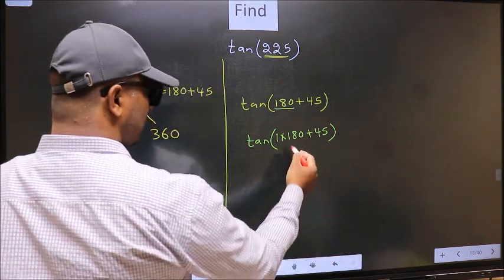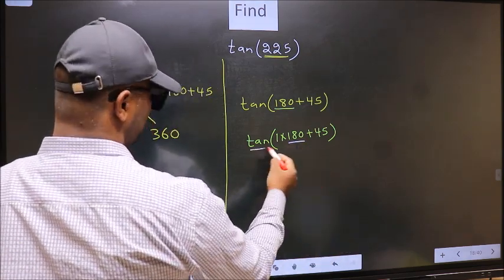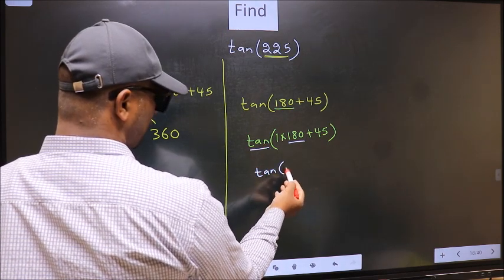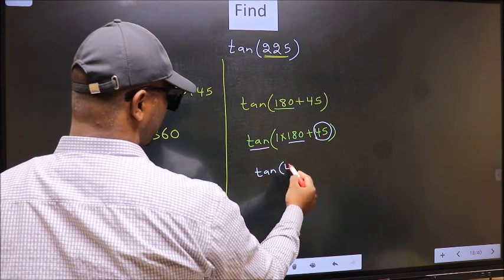Next, here we have 180. So tan is not going to change. It will remain tan. And inside, we get this angle 45.